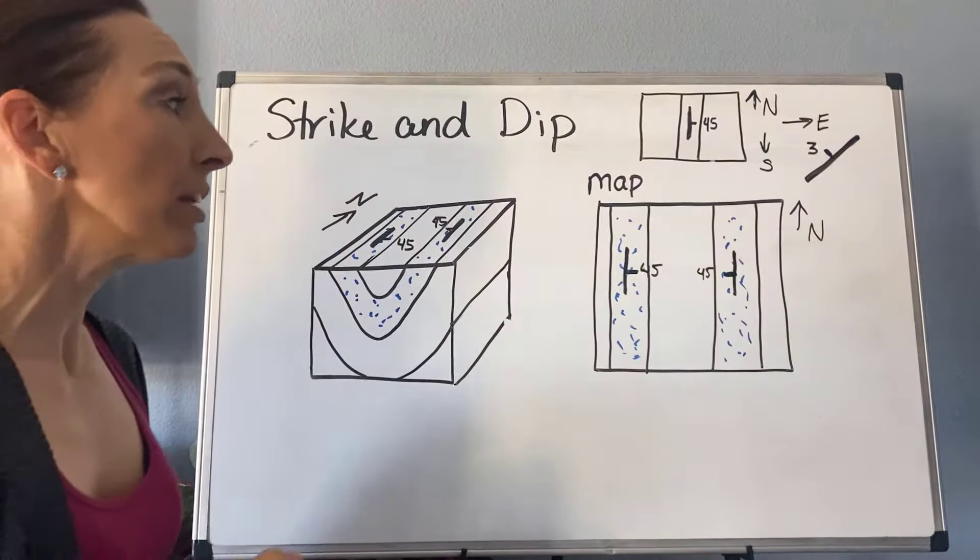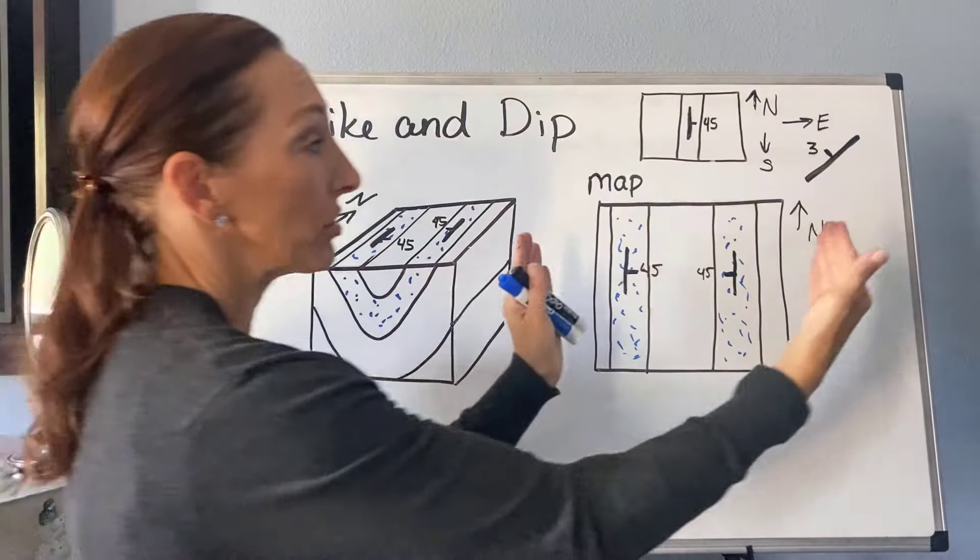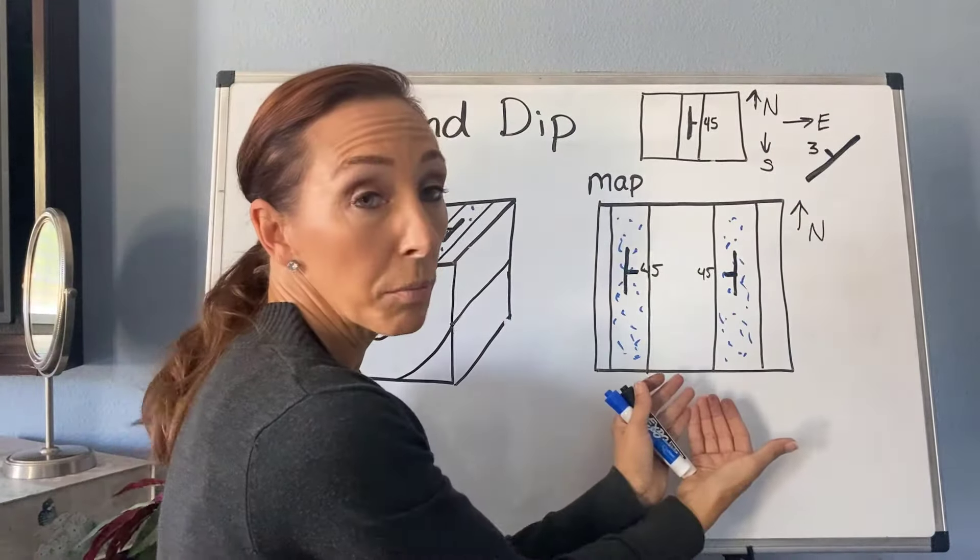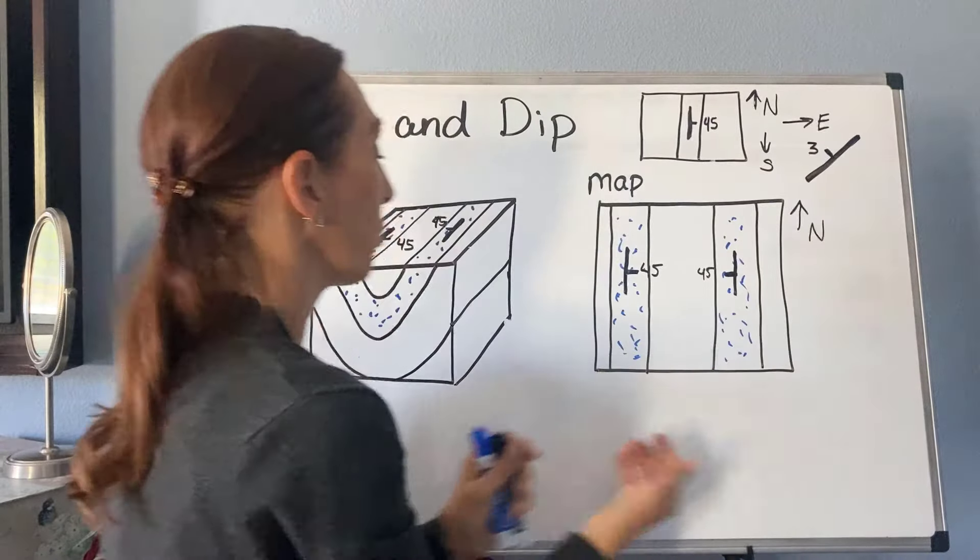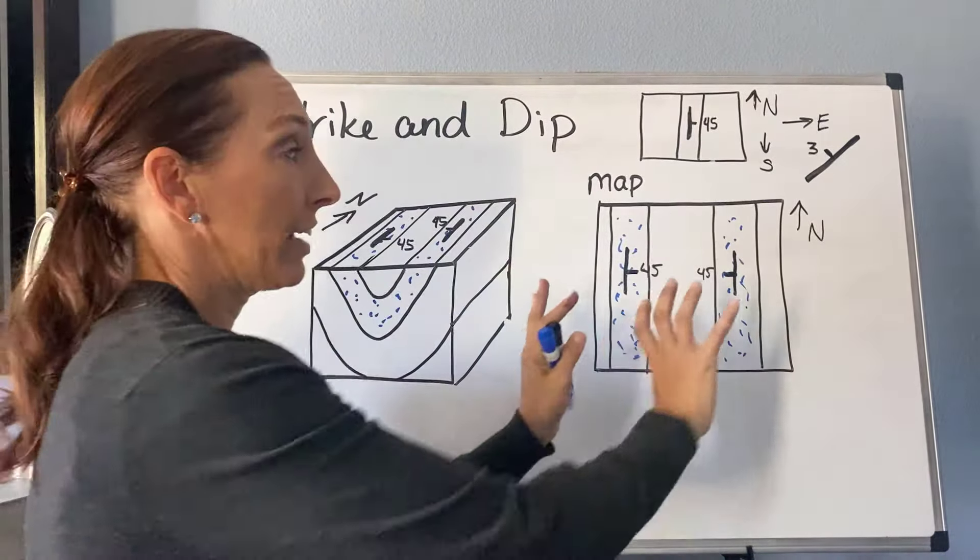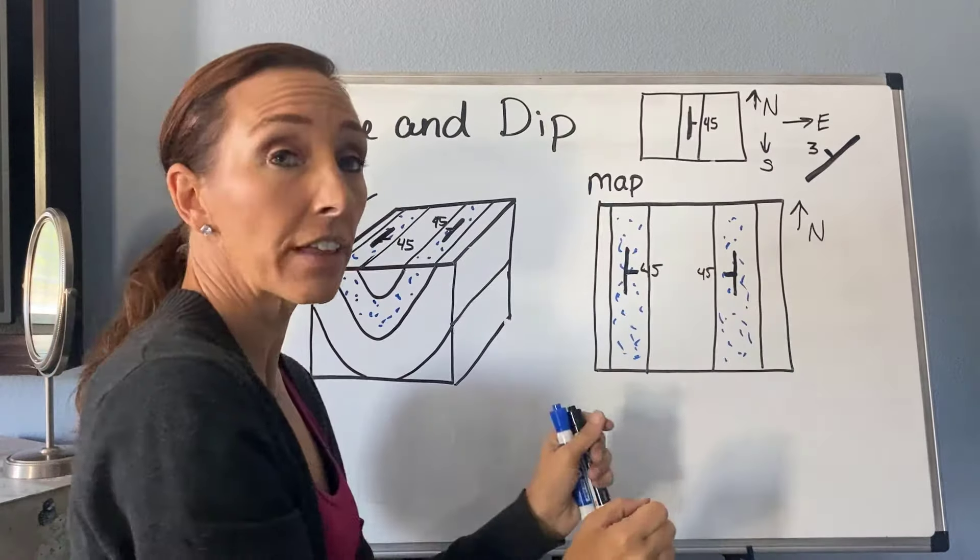And so now when I look at this, I get this visual. I can say, oh, these are dipping to the center. They meet somewhere underneath, right, in this kind of fold. So what we see here in my head, I can kind of figure that out.